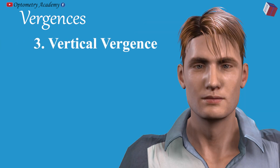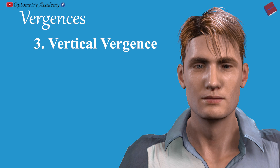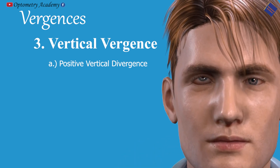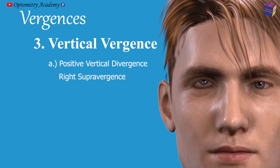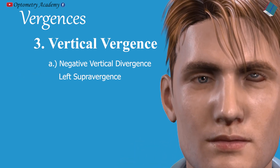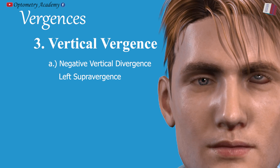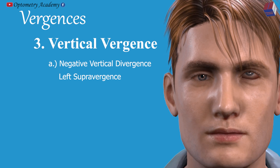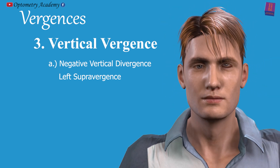Vertical vergence refers to disjugate vertical movements of the two eyes in opposite directions — one eye rotating upward and the other downward. In practice, vertical vergence movements are classified as positive vertical divergence, in which the right eye rotates upward in relation to the left — also called right supravergence — and negative vertical divergence, in which the left eye rotates upward in relation to the right, also called left supravergence. Vertical vergence movements are said to occur to correct vertical heterophoria and are reflexive, controlled and stimulated by retinal image disparity.